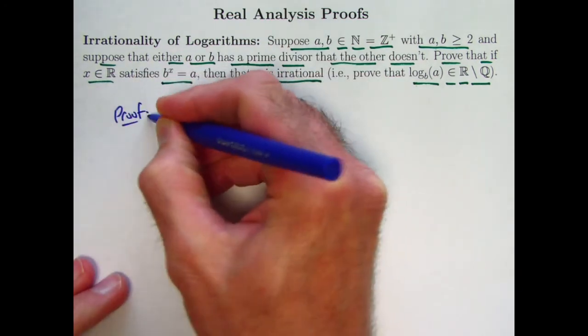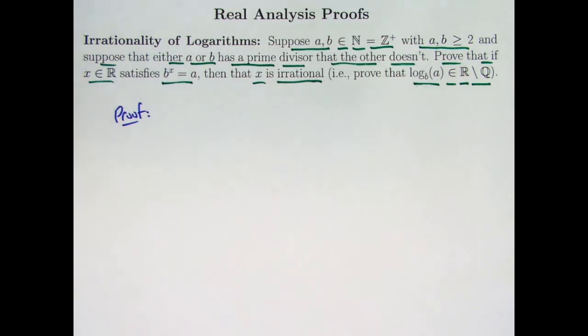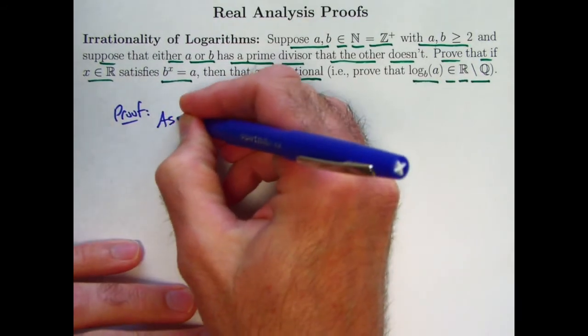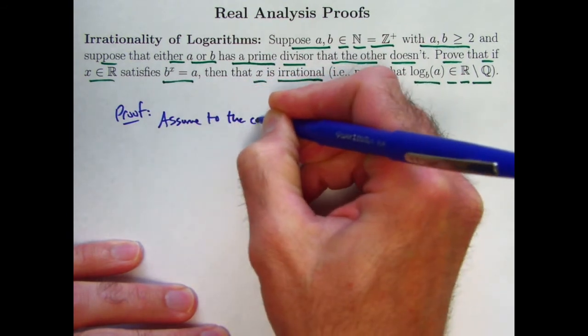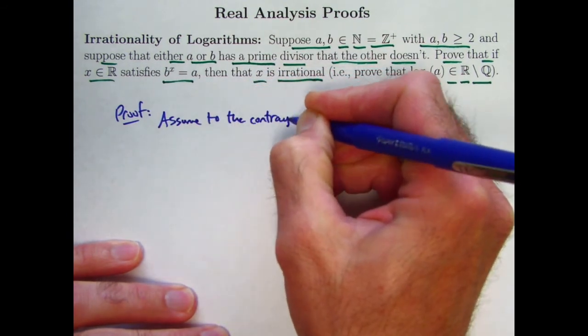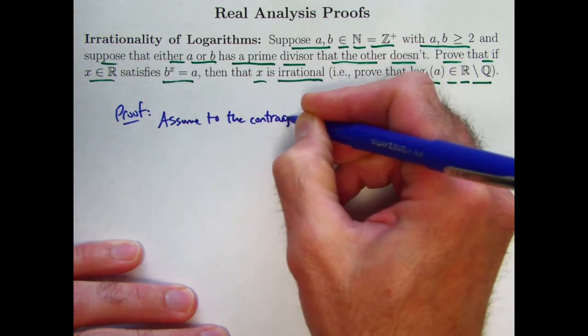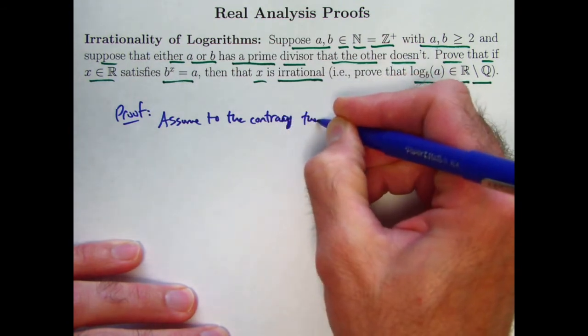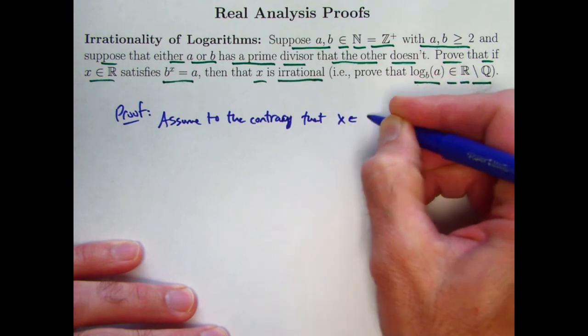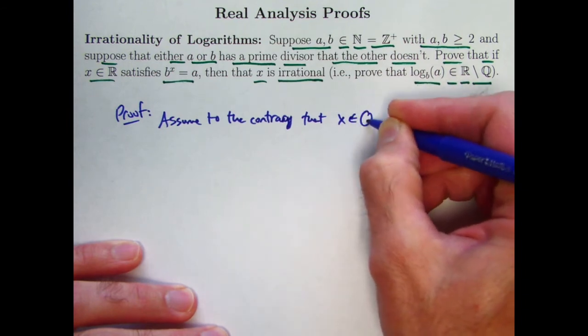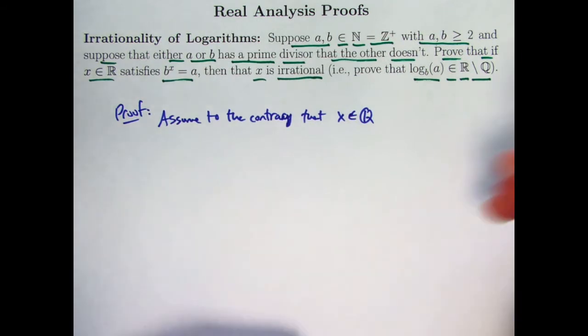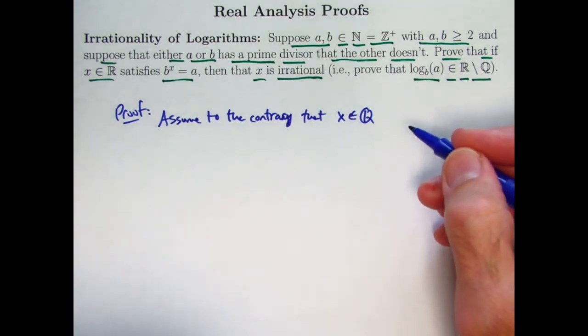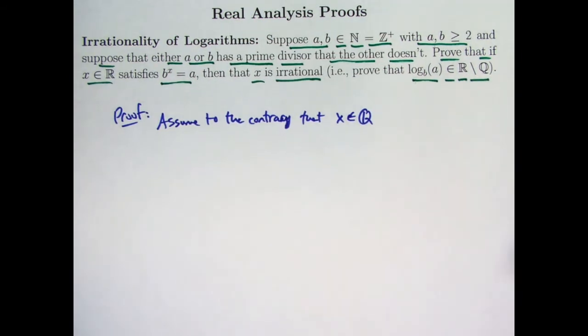Just like in video number 1, it's going to be a proof by contradiction. I'm going to assume the opposite of what I want to show. Assume to the contrary that x, in fact, is rational. It is an element of the set of rationals. Q stands for quotients. By the way, rationals are quotients of integers. R stands for reals.